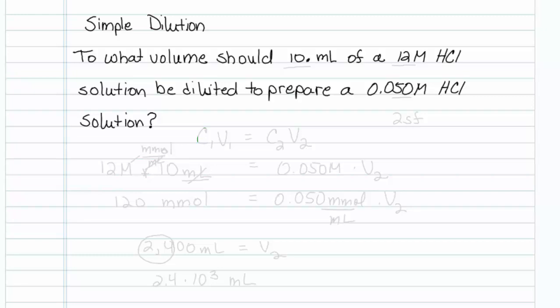This question is just a simple dilution. It reads, to what volume should 10 mls of a 12 molar HCl solution be diluted to prepare a 0.05 molar HCl solution?